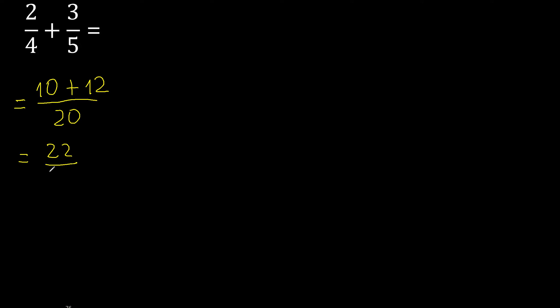22 over 20 can be simplified because it can be divided by 2. 22 divided by 2 is 11, 20 divided by 2 is 10.